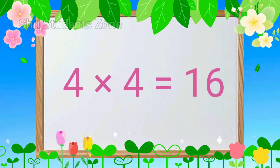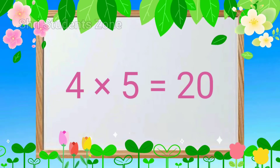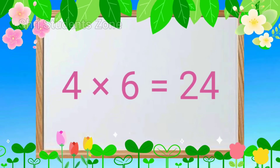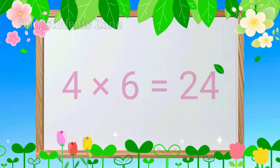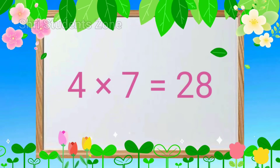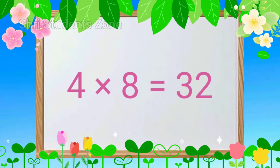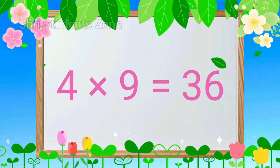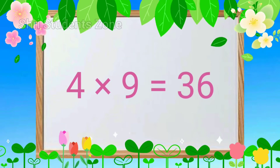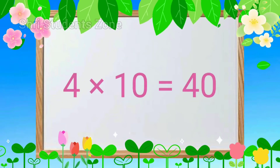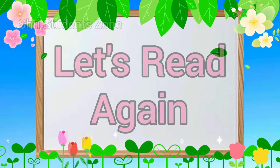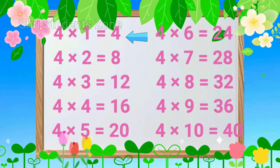Table of 4. 4 4s are 16, 4 5s are 20, 4 6s are 24, 4 7s are 28, 4 8s are 32, 4 9s are 36, 4 10s are 40. Let's read again.